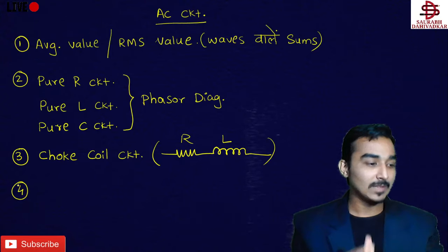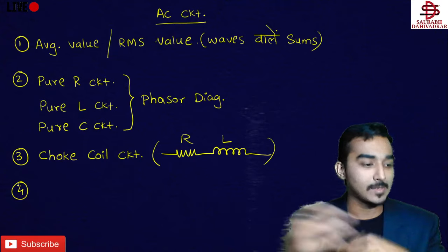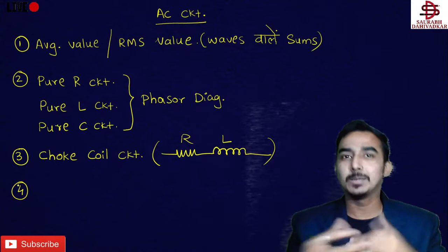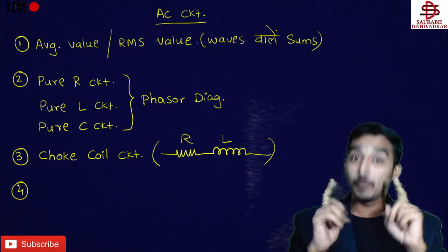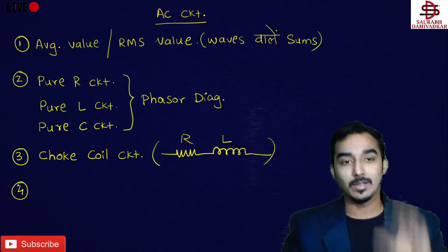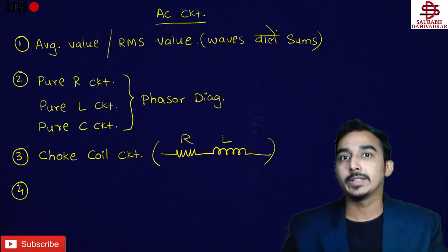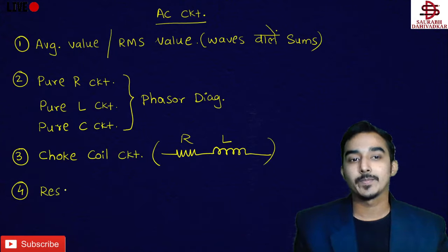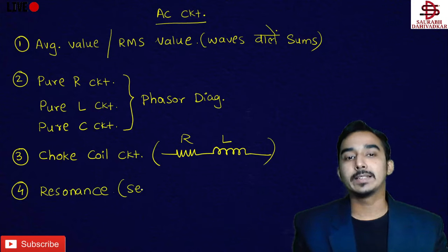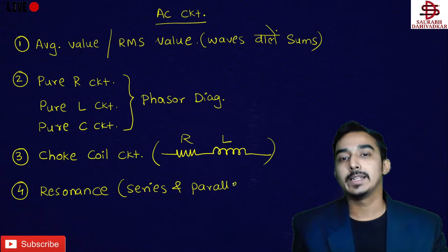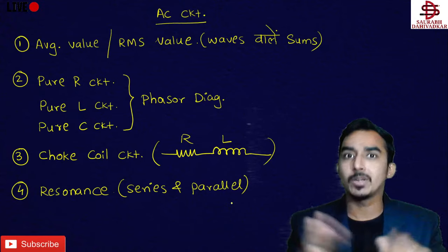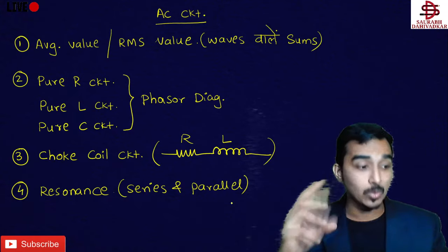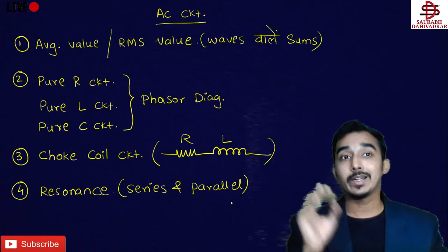Choke coil circuit के बाद आती है phasor diagram different-different circuits की, और उसके बाद आता है resonance — series and parallel resonance. यह chapter basically चार parts में divide है. काफी ज़्यादा sessions इसके होंगे, तो please be concentrated on this chapter.